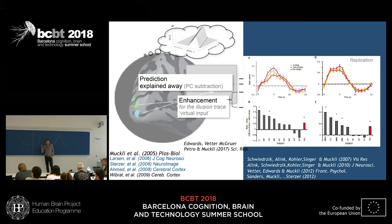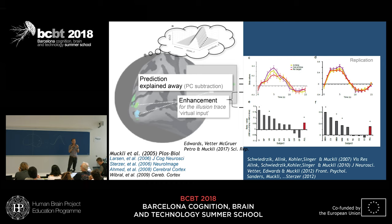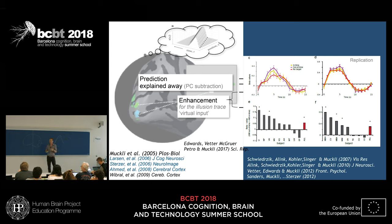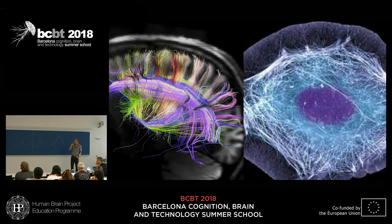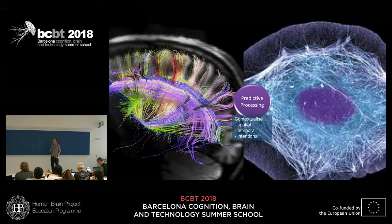If you have illusory contours, at the region where these contours are created by your internal model you have an increase of activity — counter to predictive coding, because the internal model creates something. But if you confirm it with a contour, you have less activity; it explains something away if it makes a bigger figure. So predictive processing is contextualized spatially, temporally, and takes the internal model to be predictive.